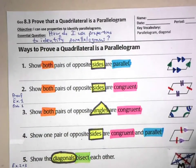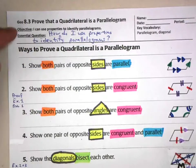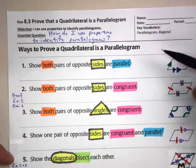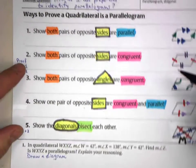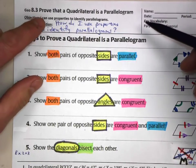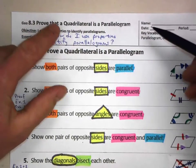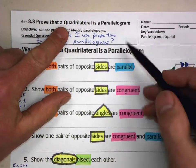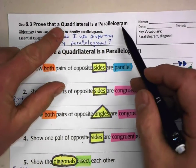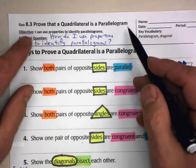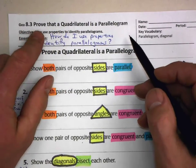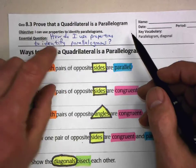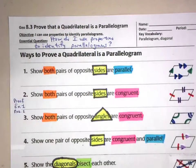Welcome to 8.3. We are going to figure out five different ways that we can use to prove that a quadrilateral is a parallelogram. That's what we're all about here — ways of proving that a quadrilateral is a parallelogram.